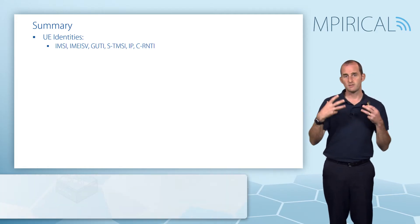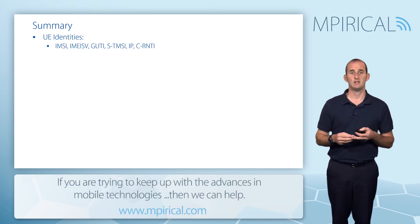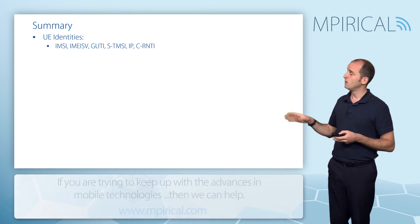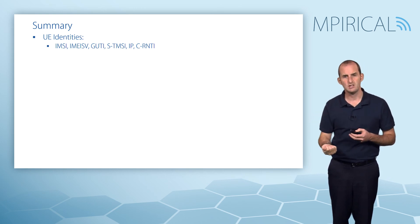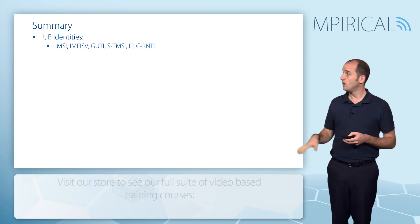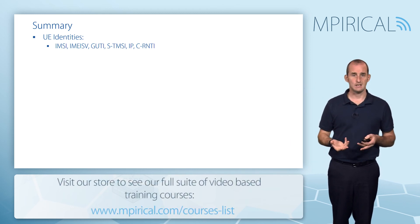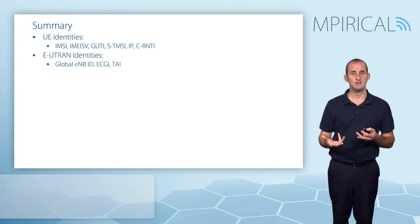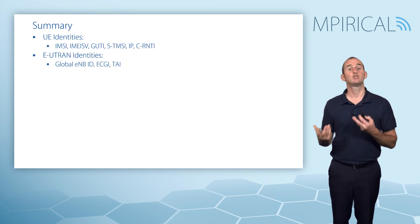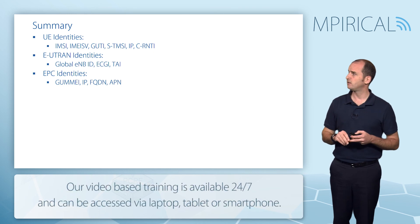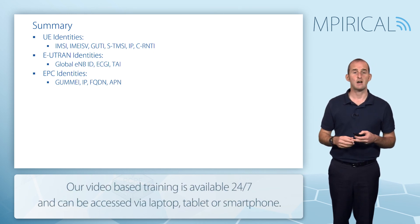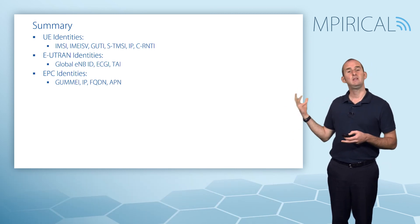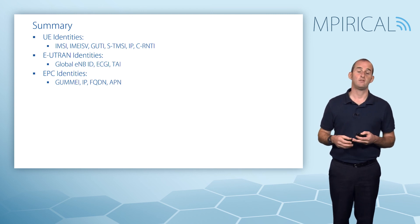In summary, we saw a variety of different identities used in LTE. From the perspective of the mobile user — subscription or terminal — we saw the IMSI, IMEISV, GUTI, S-TMSI, IP addressing, and the Cell Radio Network Temporary ID. From the E-UTRAN perspective, we saw the Global eNodeB ID, cell ID, and tracking area ID. From the core network perspective, we saw the Globally Unique MME ID, unique IP addresses, fully qualified domain names, and on a per-PDN connection basis, access point names.